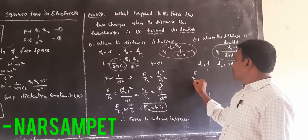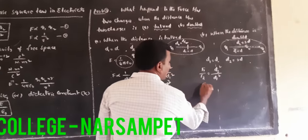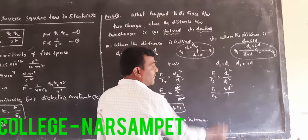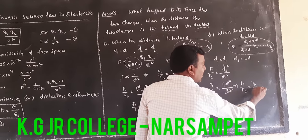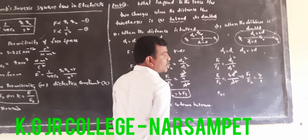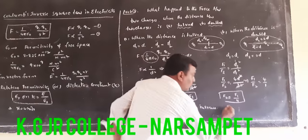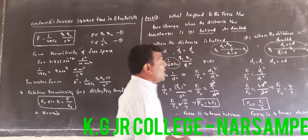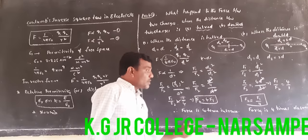Using the same formula: F1 by F2 equals D2 squared by D1 squared. D2 is 2D, so D2 squared is 4D squared. D1 squared is D squared. D squared cancels, giving F1 by F2 equals 4 by 1. By cross multiplication, F2 equals F1 by 4. Therefore, when the distance is doubled, the force decreases 4 times. To summarize: when the distance is halved, the force increases 4 times; when the distance is doubled, the force decreases 4 times.